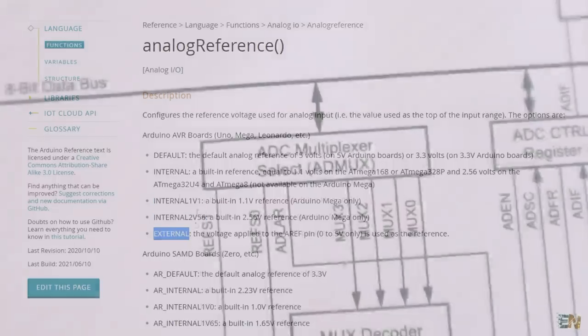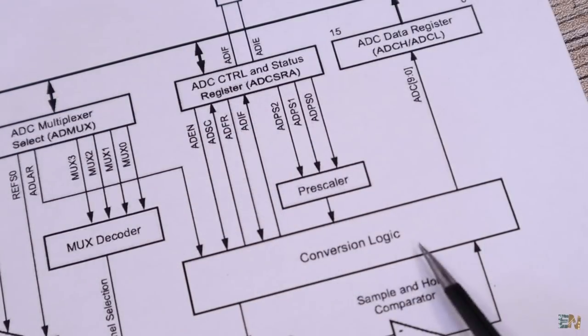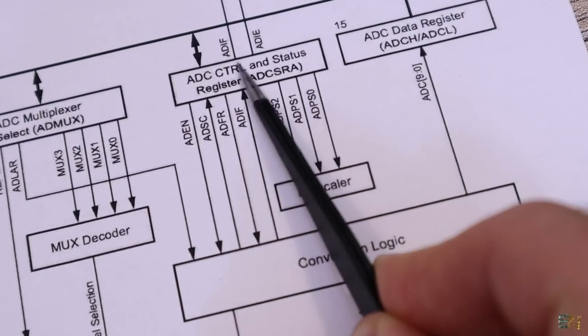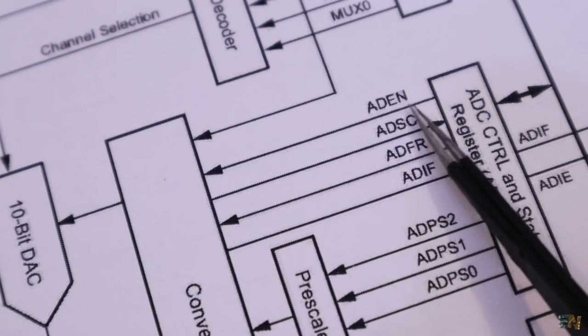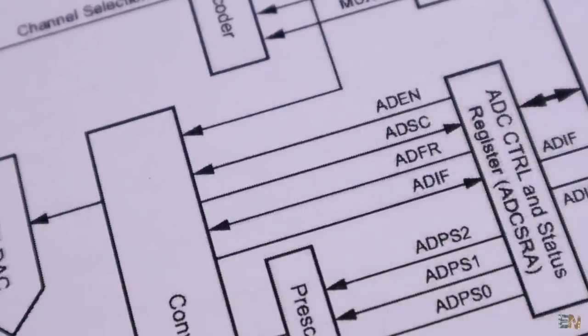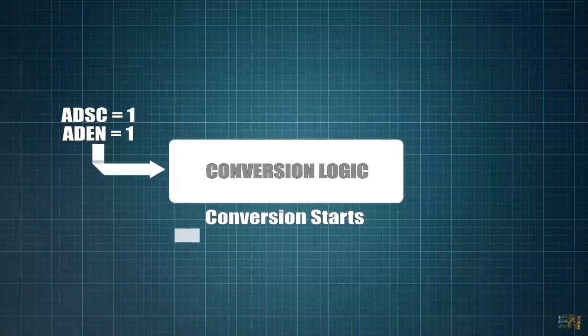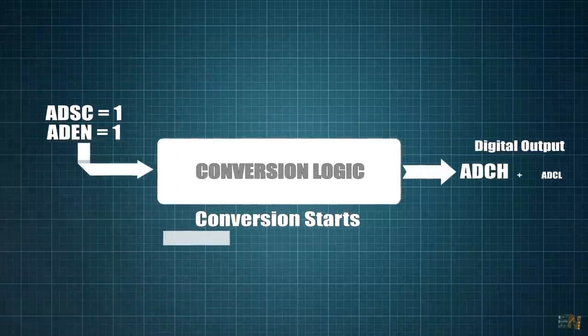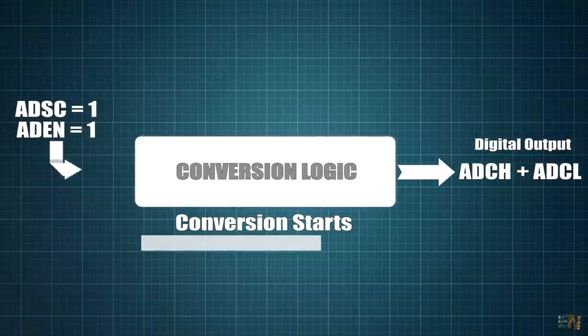So now we have the ADC input selected and the reference as well. All we need is to make the conversion which is controlled with the ADCSRA register. To start the conversion, we need to put ADEN and ADSC bits to 1. Then we have to wait till the conversion is over and we will have the digital value on the ADCH and ADCL bytes where H and L stands for high and low sides of the value.